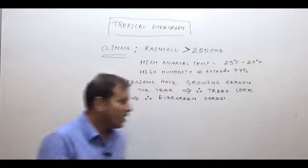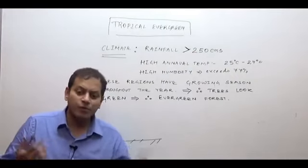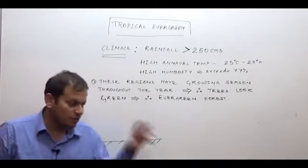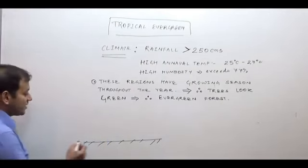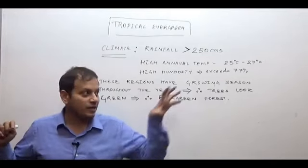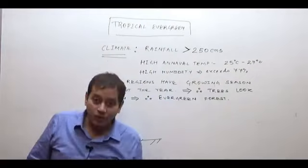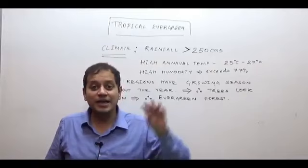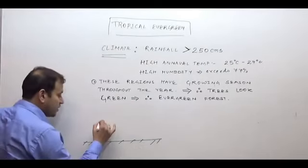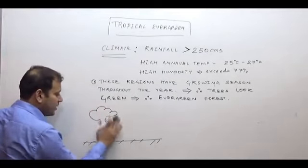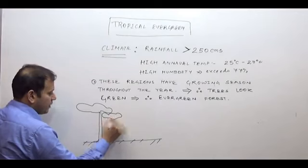The tropical evergreen biome — also found in equatorial regions, which receive rainfall throughout the year — has very high productivity. Because the trees are growing throughout the year, there is competition among trees for water and sunlight. Leaves carry out photosynthesis, which requires high sunlight, so trees compete for sunlight and grow to a very great height.